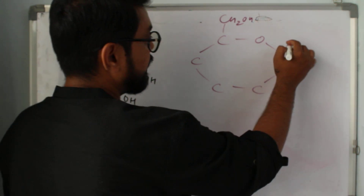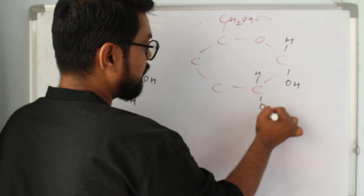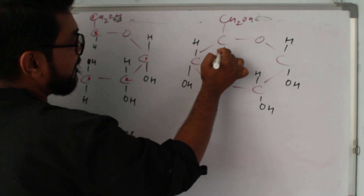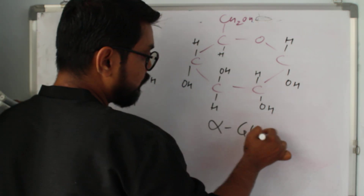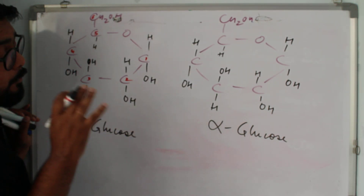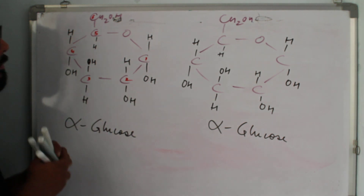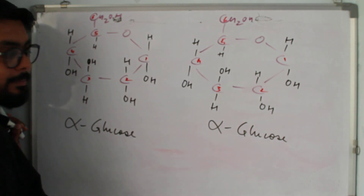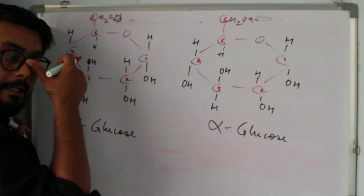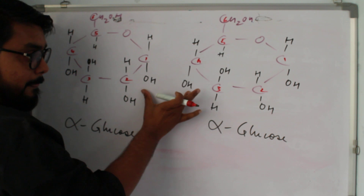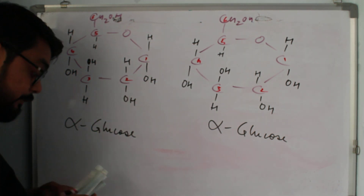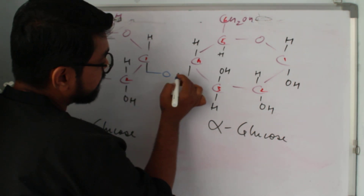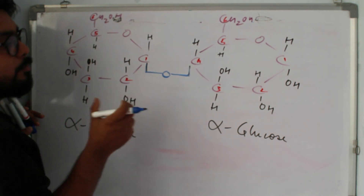All the components are the same for the second structure since it's the same sugar. So here I have another molecule of alpha glucose. I'll number its carbons: one, two, three, four, five, and six. Now we need to combine these two molecules of alpha glucose together.